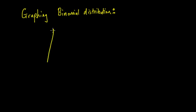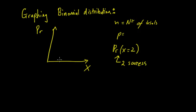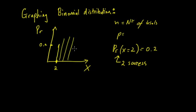When we're graphing the binomial distribution, we're looking at two axes: the probability on one axis and x on the other. Remember, n equals the number of trials, and p equals the probability of success. When we're working out the probability of, say, x equals 2, that means there are two successes. So if the probability of x equals 2 is 0.2, that would correspond to a value of 0.2 on the graph.